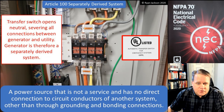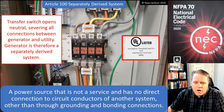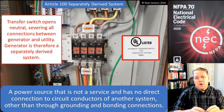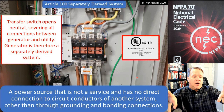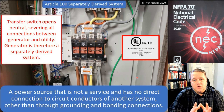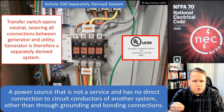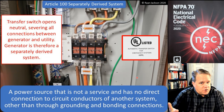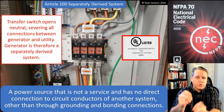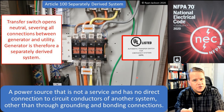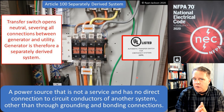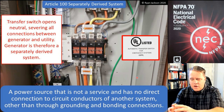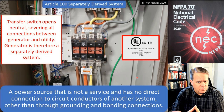Look at this transfer switch — it switches all three hots and the neutral. Because it switches the neutral, there is no connection between the generator on one side of the switch and the utility on the other side. That makes it a separately derived system. When the neutral is switched, or when there's no neutral at all, you have a separately derived system. That means you must connect neutral to frame at the generator, create a grounding electrode system, and follow NEC 250.30(A) — including installing a system bonding jumper.